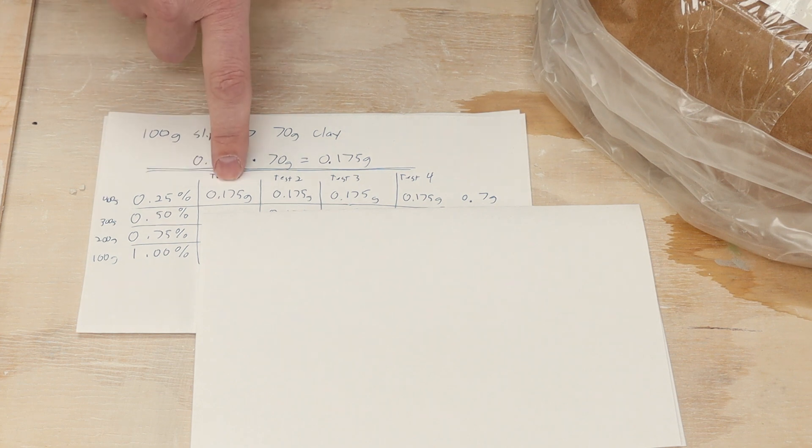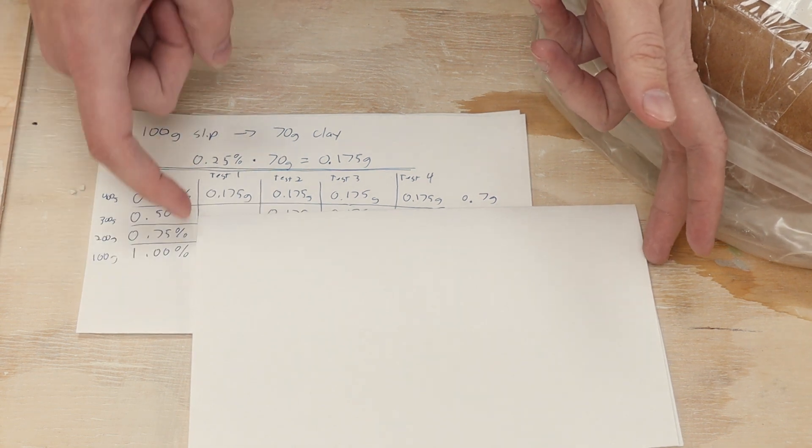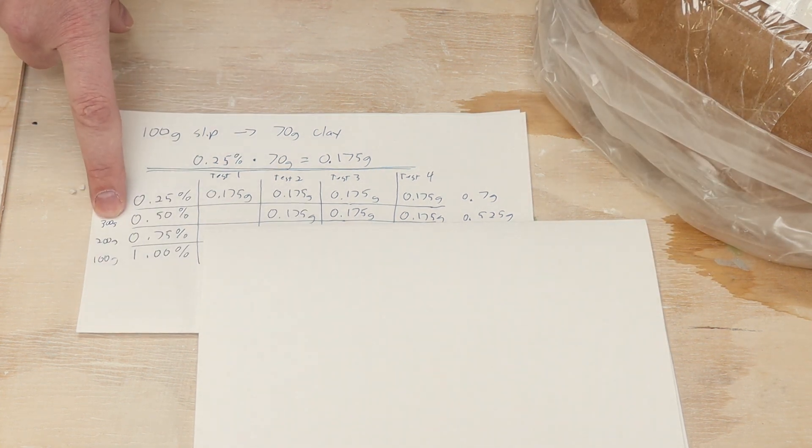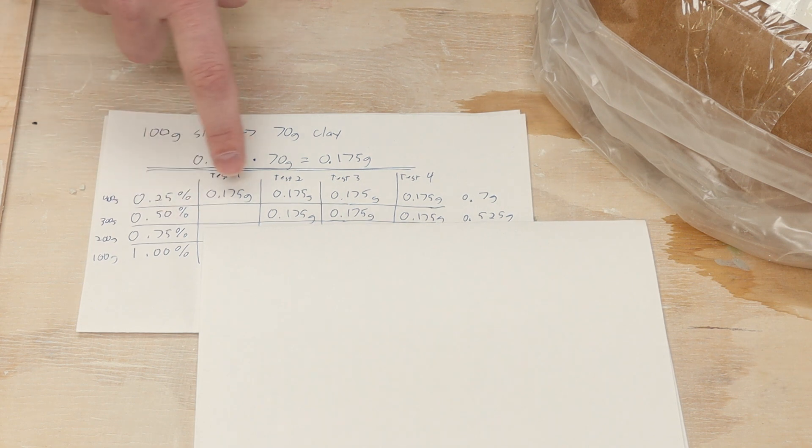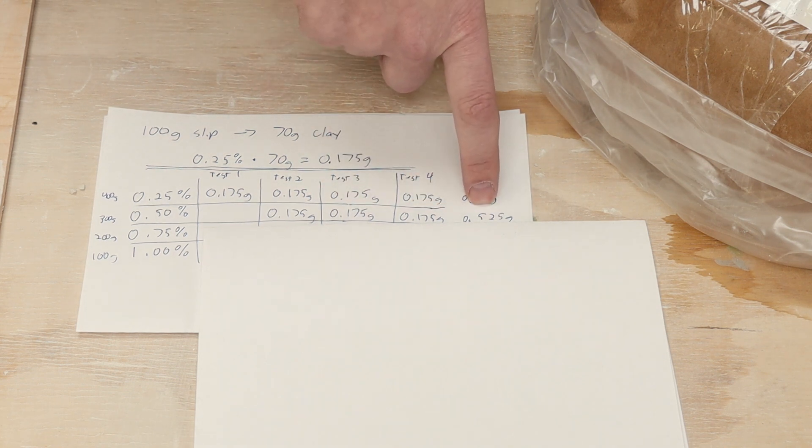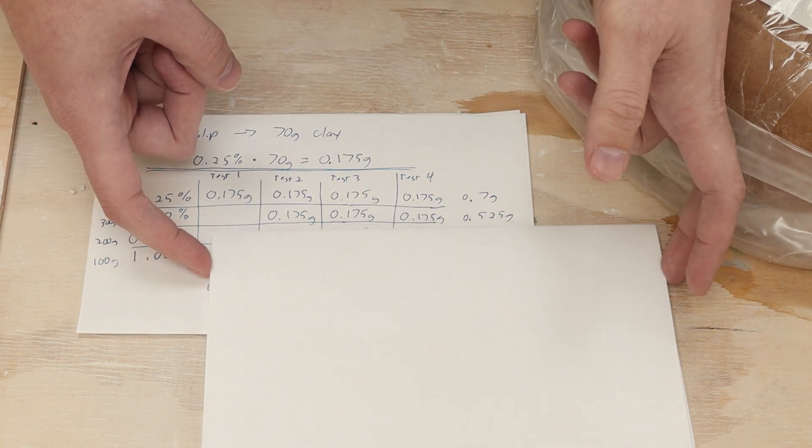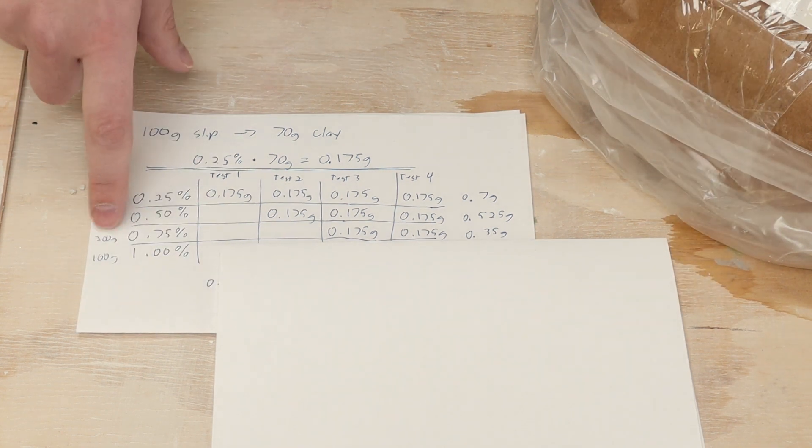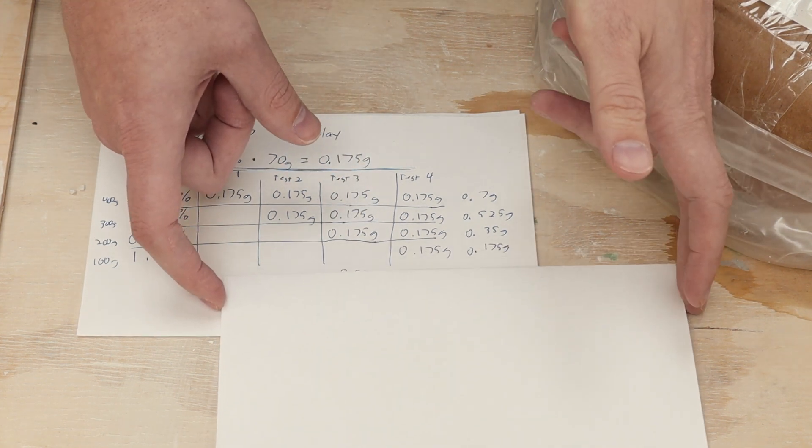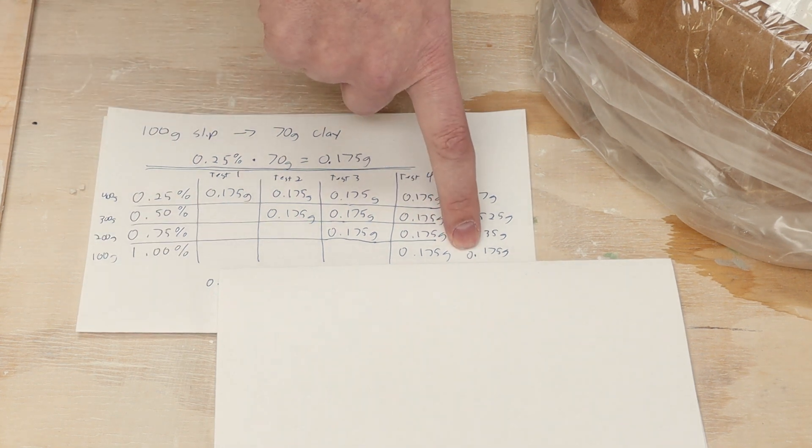I will then slip cast one of my test tiles. After that, I'll be left with 300 grams of slip, and I want to bring the whole quantity up to 0.5 percent. So I'll need to add three units of 0.175. One, two, three. And that will get me to 0.525. So I'll need to add another 0.525 grams. I'll slip cast that. Then I'll have 200 grams left. I'll need to add another 0.175 for the two that are left.